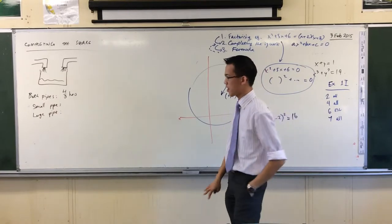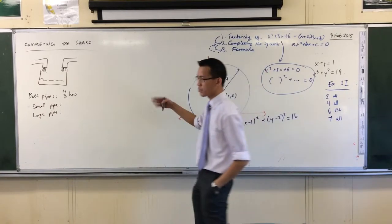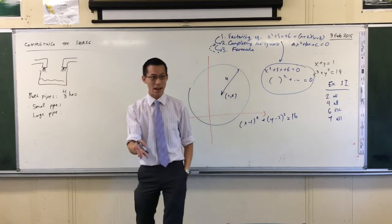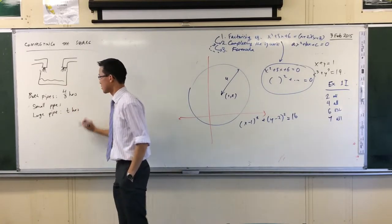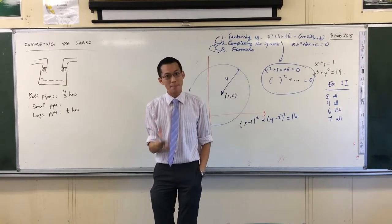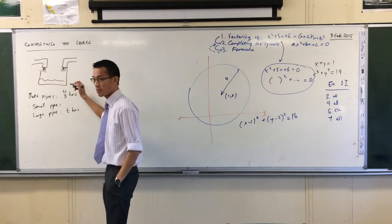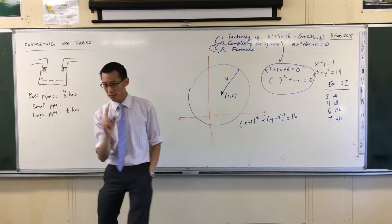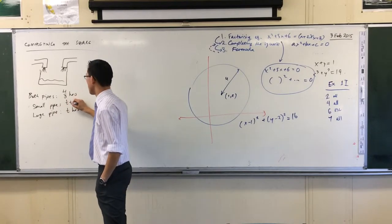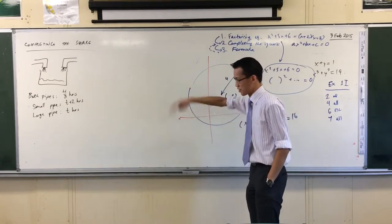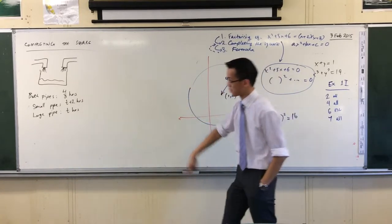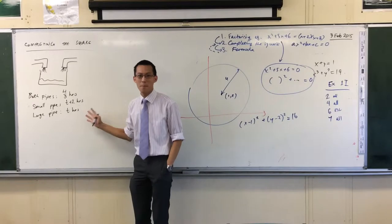You must introduce a variable, but you have a choice. Which one would you like it to be? I'm going to use T for time. I'm going to say the large pipe takes T hours, which means the small pipe, which takes longer, is going to be T plus two hours. Whichever you do, you've got to be consistent, but I've done it this way because I just like positives. There's my numbers.